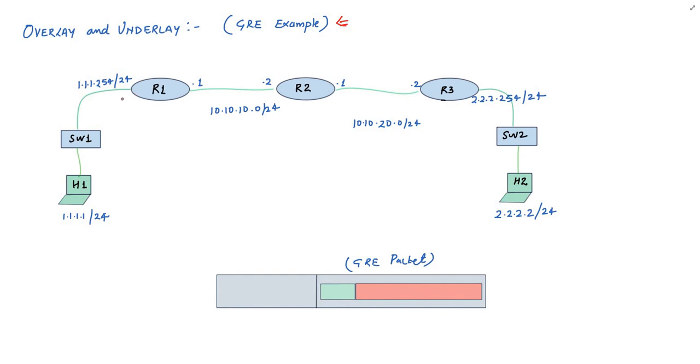Consider this diagram. Here we have three routers, R1, R2 and R3. R1 and R3 are managed by me but I do not have control over R2. You may say that R2 is part of the internet.